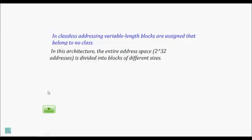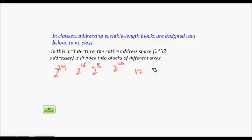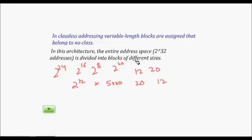In this architecture we have 2 to the power of 32 addresses, divided into different-sized blocks. You are no longer restricted to 2 to the power of 24, 16, or 8 hosts per network. For example, you can have 2 to the power of 20 hosts by using 12 bits for the network and 20 bits for the host ID, or around 5000 hosts with 20 bits for the network and 12 bits for the host ID. This flexibility is the most important feature.